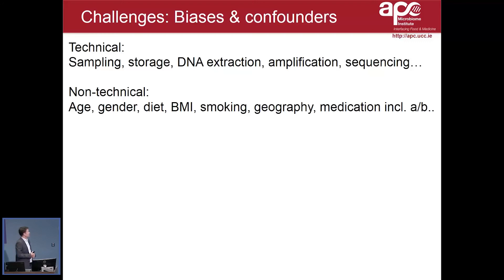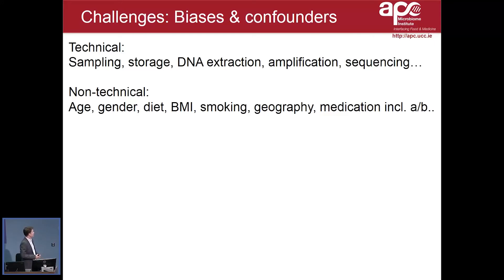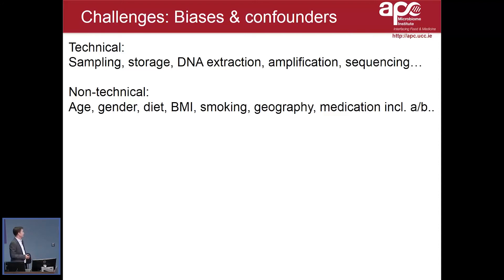There are some technical biases relating to sampling, storage, DNA extraction, amplification, and sequencing. And there are non-technical ones that can be seen as biological confounders: age, gender, diet, smoking, medication, and so on. I think it's very important for anyone interested in the microbiome to be aware of these things.